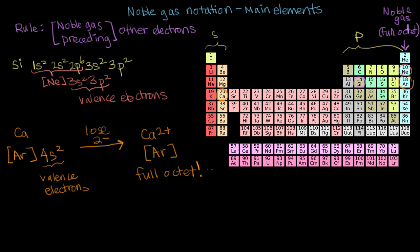So one of the many pros of writing things in noble gas notation, besides the fact that it makes your hand less tired, is that it makes it really easy to see where your valence electrons are, and whether or not your ion or atom has a full octet.